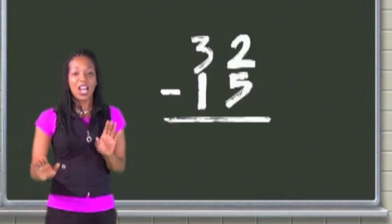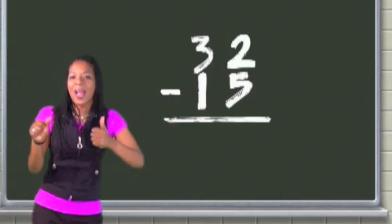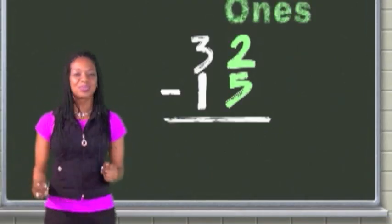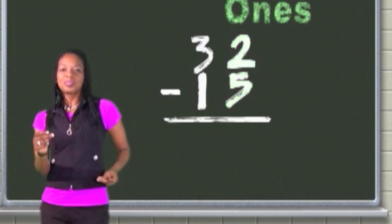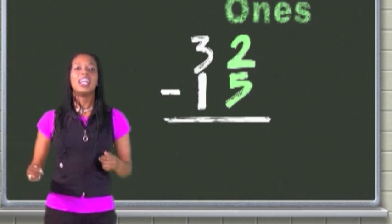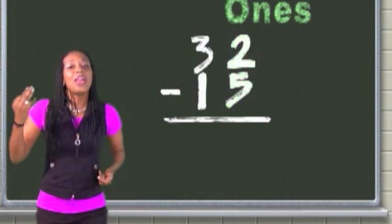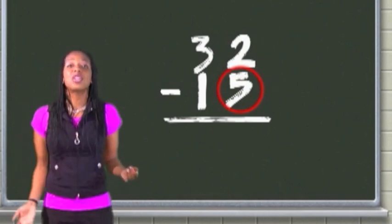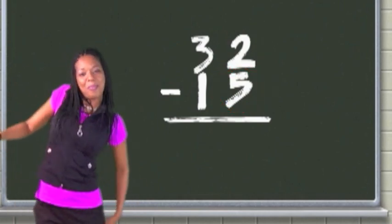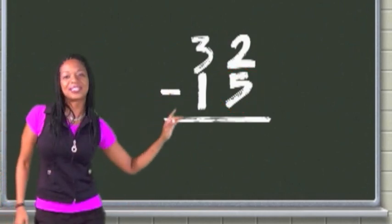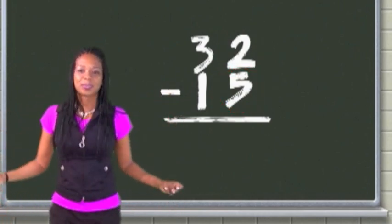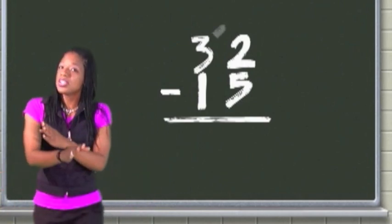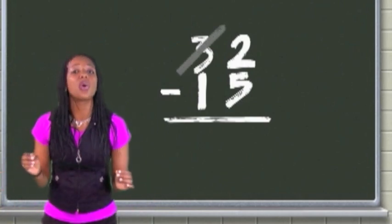Always begin the subtraction fun at the far right over there with the one. When the number on top is smaller than below, it's time to go with the regrouping flow.